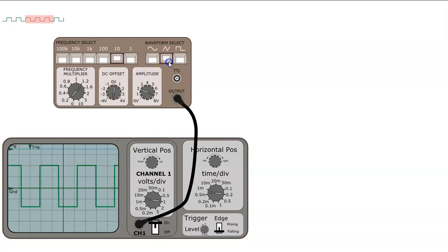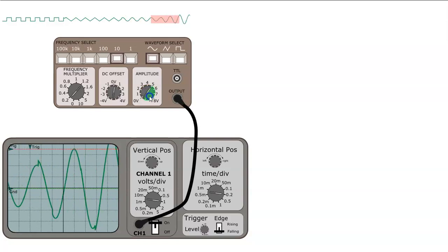So we have a square waveform, a triangular waveform and a sinusoidal waveform and we can adjust things like the amplitude by changing this dial and we can see that the changes are being reflected in the waveform above.